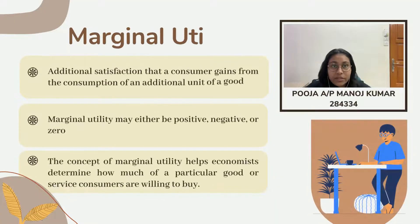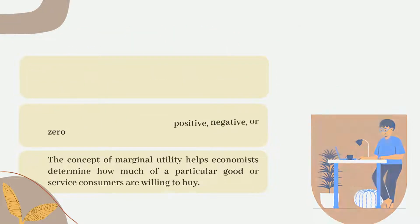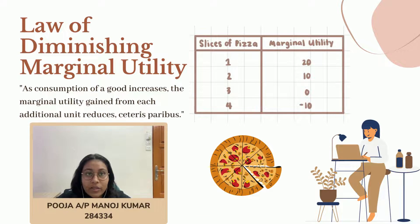Marginal utility is the additional satisfaction that a consumer gains from the consumption of an additional unit of a good. Marginal utility may be positive, negative, or zero. It helps economists determine how much of a particular good or service consumers are willing to buy. The law of diminishing marginal utility states that as consumption of a good increases, the marginal utility gained from each additional unit reduces, ceteris paribus.